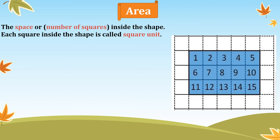Let's see an example. Here we have a rectangle colored blue. It has some squares inside it. If we count those squares inside the rectangle, we find 15. So the area of this rectangle is 15. Area tells us how many square units fit inside a shape.